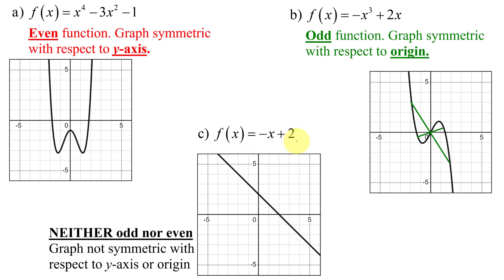Looking at our last function that was neither odd nor even: it should not be symmetric with respect to the y-axis — definitely true. And for symmetry with respect to the origin, if I take a point on the graph and draw a line through the origin, is there a point equidistant on the other side? No. So the graph of this function is not symmetric with respect to the y-axis or the origin.